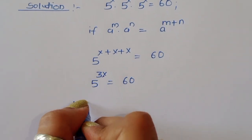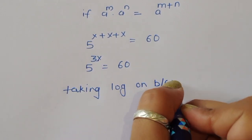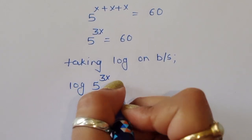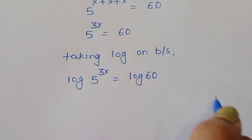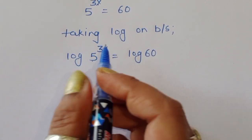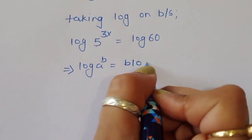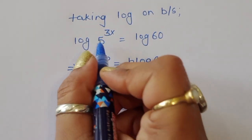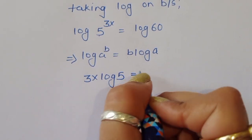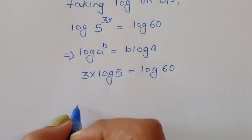Now we have to find out the value of x, so we take log on both sides. Taking log on both sides, we get log of 5^(3x) is equal to log of 60. Now we use the formula log(a^b) = b·log(a), so we get 3x·log(5) is equal to log(60).